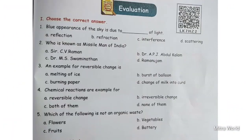Number 1. Choose the correct answer. Blue appearance of the sky is due to blank of light. Options are: reflection, refraction, interference, scattering. Very good children. Blue appearance of the sky is due to scattering of light.